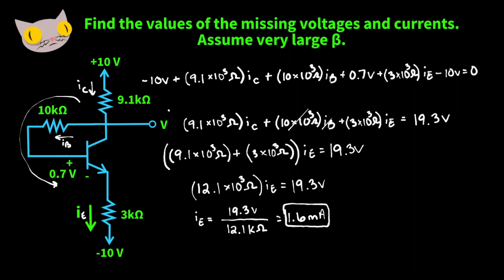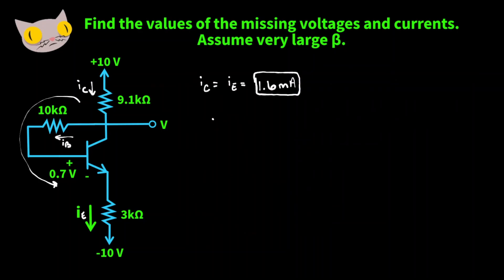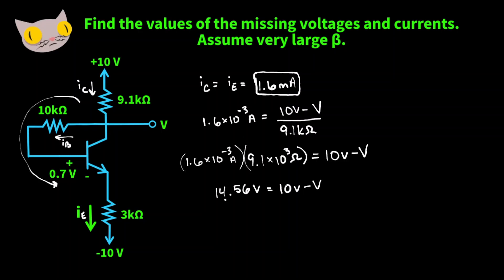Now we just have to find this missing voltage. We take our collector current value and set it equal to 10 volts minus our missing voltage, over 9.1k ohms. Multiplying both sides by 9.1k ohms gives us about 14.56 volts on the left and 10 minus our missing voltage on the right. That gives us a voltage of about negative 4.5 volts. We found all our currents and our missing voltage value. That's it for this video — I hope you enjoyed and thank you for watching.